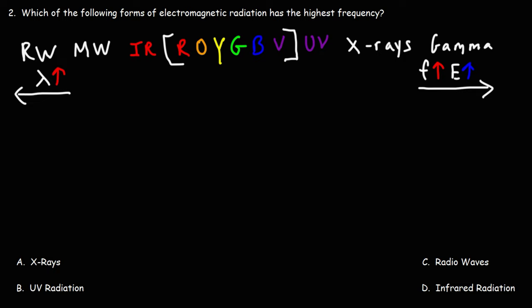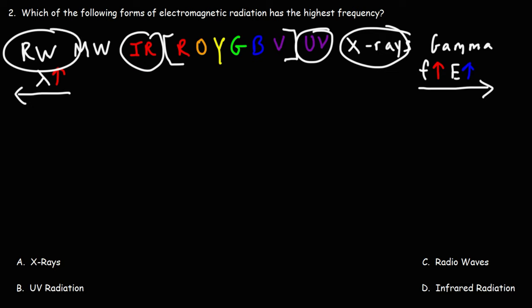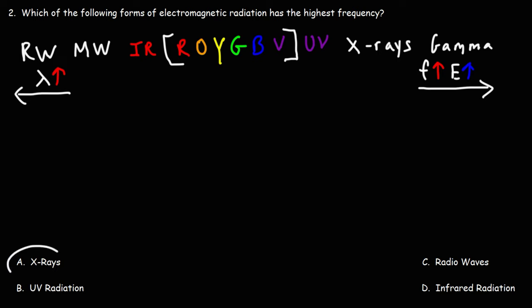Number two: which of the following forms of electromagnetic radiation has the highest frequency? Is it X-rays, UV radiation, radio waves, or infrared radiation? Out of these four options — infrared, UV radiation, X-rays, and radio waves — the one with the highest frequency is the one closest to gamma on the spectrum, which is X-rays. The correct answer is A.